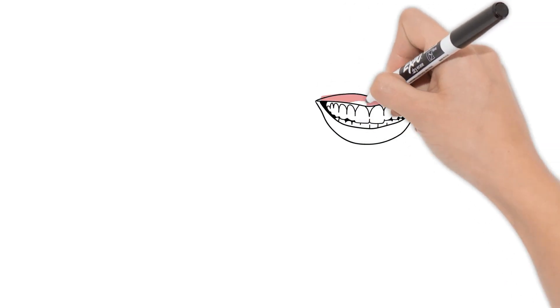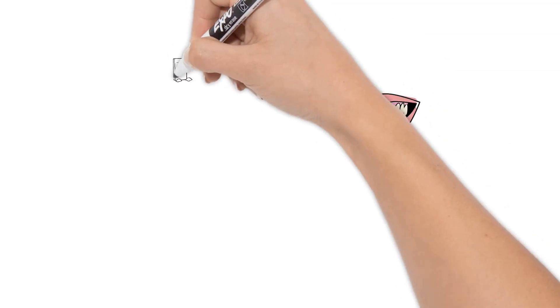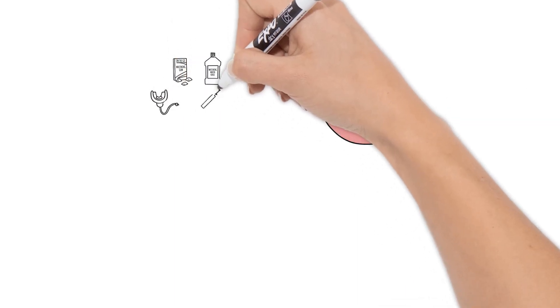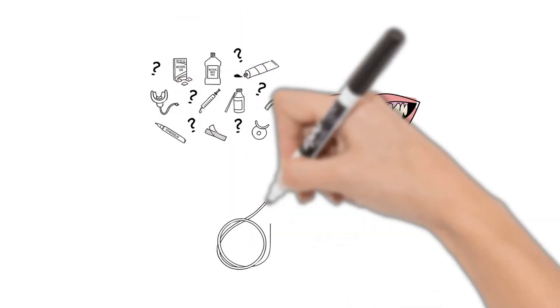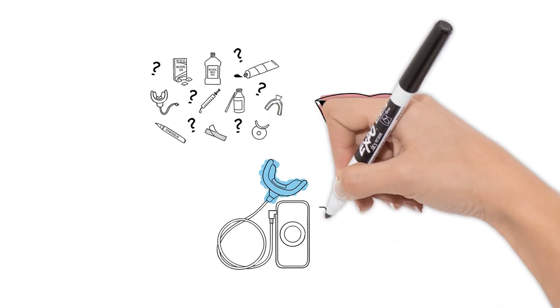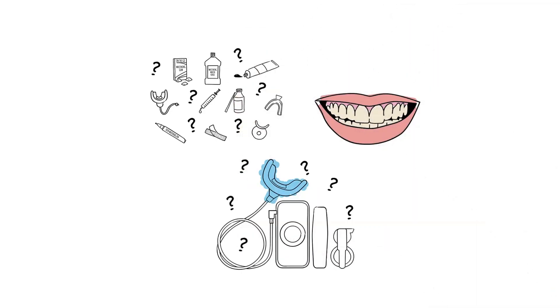So what whitening agents are out there, and do they all work? Lots of other whitening treatments use an LED light or a laser during the whitening process. You've probably seen ads for these kinds of teeth whiteners. Are these lights and lasers really effective, though?